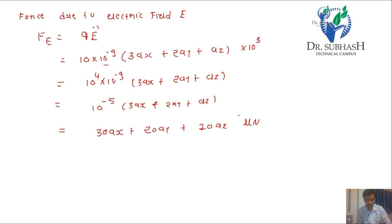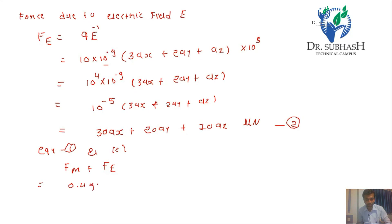Now, combining equation 1 and equation 2, the total Lorentz force is Fm + Fe. The force Fm gives components including 0.442 Ax, and adding Fe gives (30 Ax + 20 Ay + 10 Az) micronewtons, yielding the total combined force.